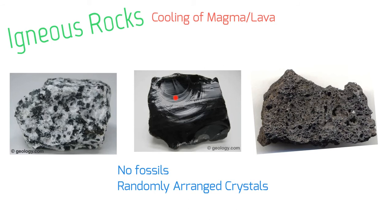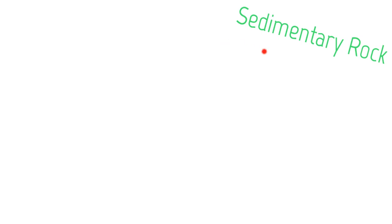If you look closely, igneous rocks have little crystals inside. This one cooled very quickly so it became one crystal, while other igneous rocks cool at different speeds — that's what gives you different colors and makes it look spotty. Another example has a lot more pores and holes in it. So remember: igneous rock is the cooling of magma and lava, which means no fossils and randomly arranged crystals throughout.